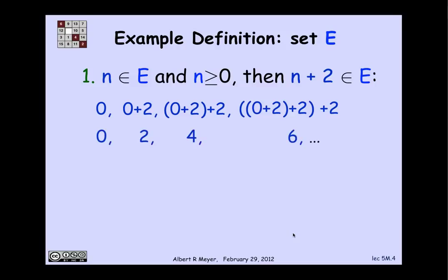And it's clear what I'm getting is 0, 2, 4, 6, and so on. And I'm going to get all of the non-negative even numbers in that way.